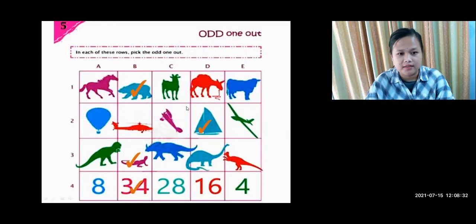In this picture there is a column A, B, C, D, E and rows 1, 2, 3, 4. Number 1, as you can see...